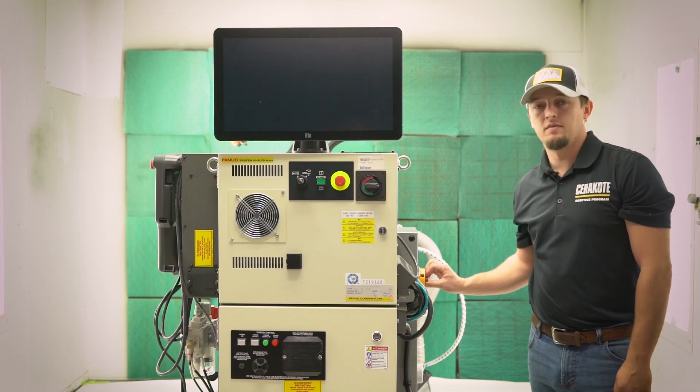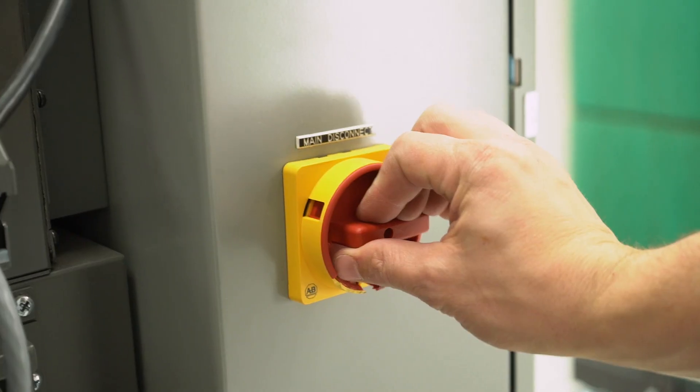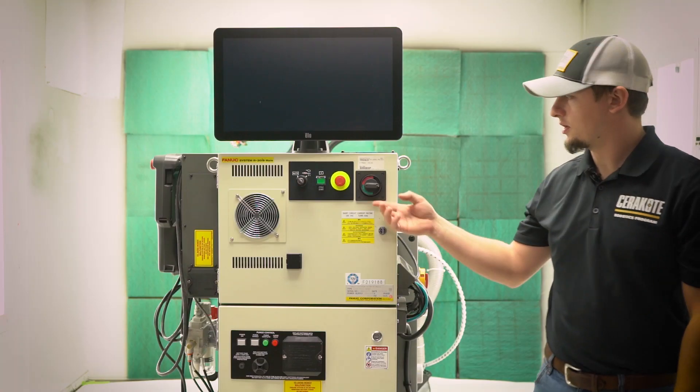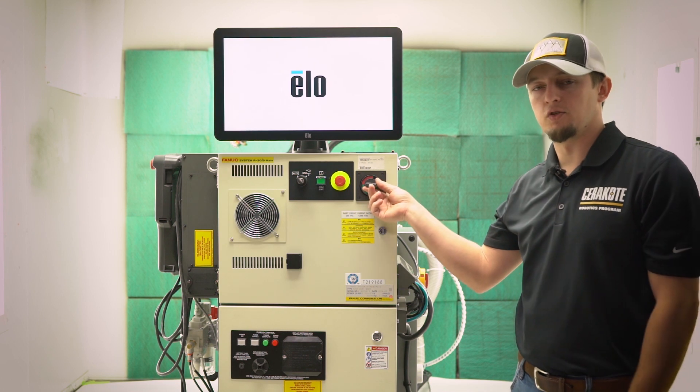We'll flip the main disconnect on the concept systems enclosure in the back. Then we'll turn on the FANUC controller power.